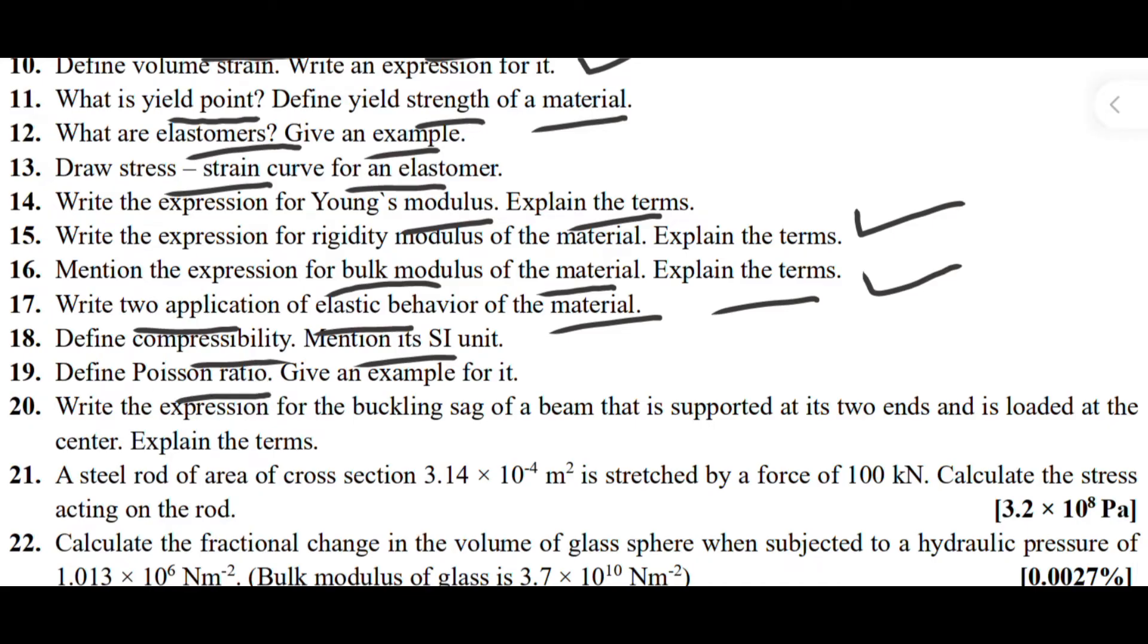Next one is: Write two applications of elastic behavior of the material. Define compressibility, mention its SI unit. Next one is: Define Poisson's ratio, give an example for it. Next one is: Write the expression for the buckling sag of a beam that is supported at its two ends and is loaded at the center, explain the terms.